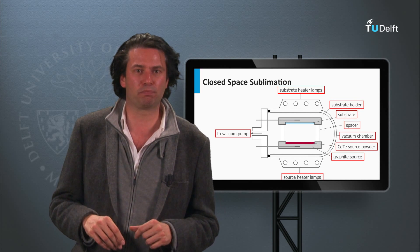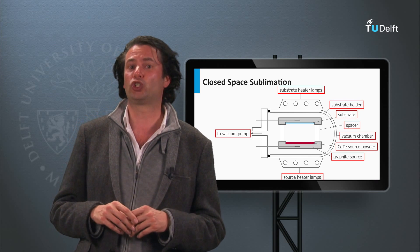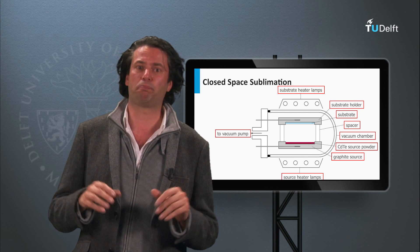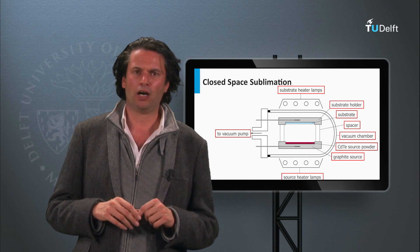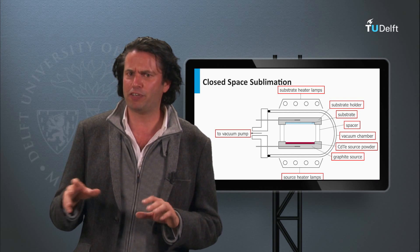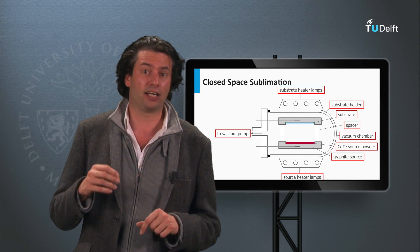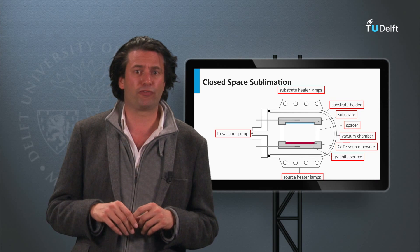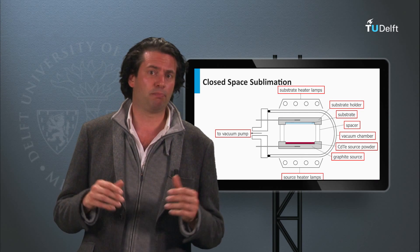First Solar and Antec are companies producing cadmium telluride solar modules using the closed space sublimation method. Among new start-ups moving into the cadmium telluride PV technology are Calyxo, Primestar Solar from General Electric, and Abound Solar.